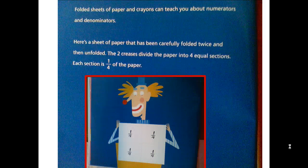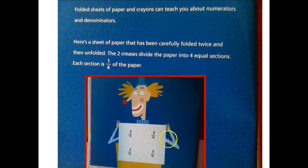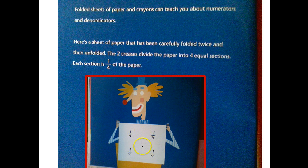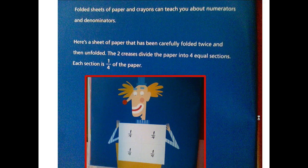With folded sheets of paper and crayons, we're going to talk about something you can do at home. Here's a piece of paper that is folded into fourths — folded right down the middle this way, and right down the middle this way. So four equal pieces. Each piece is one-fourth.